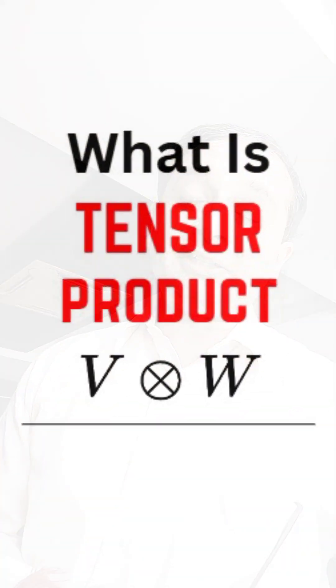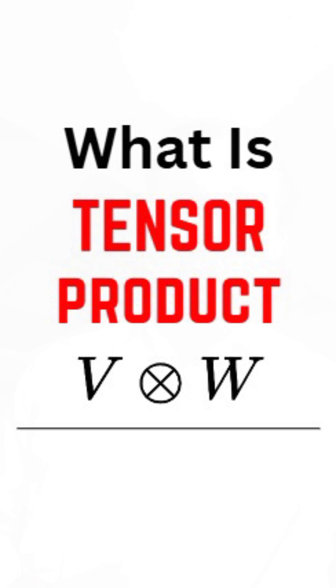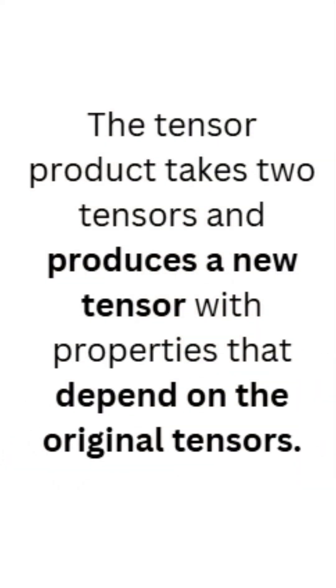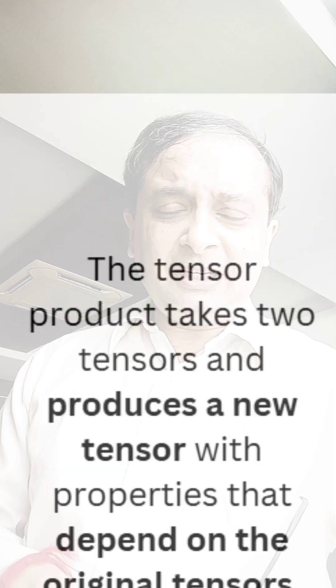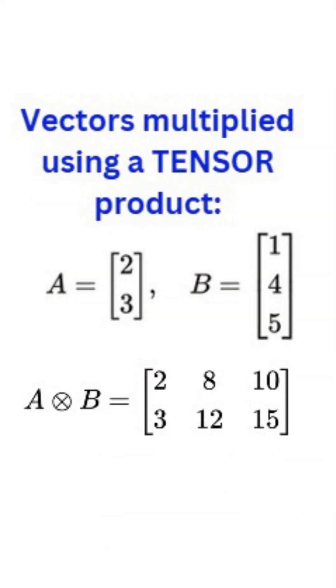This is an important concept in both general relativity and quantum mechanics called the tensor product. The tensor product takes two tensors, they multiply, and they produce a new tensor. Similarly, it can take two vectors from two different vector spaces and produce a new vector.